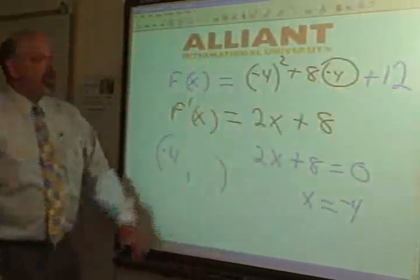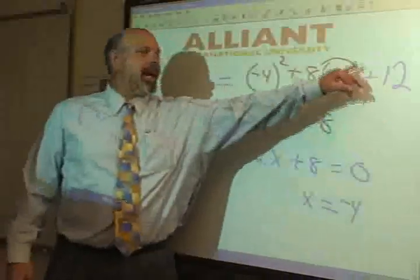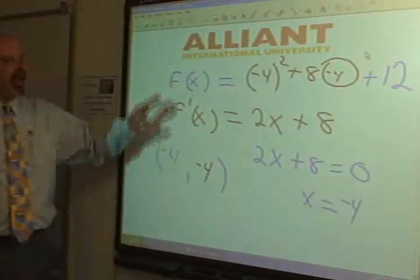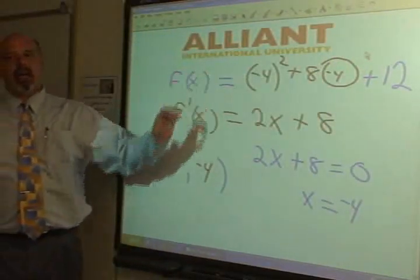Solved. This is 16, 28, minus 32 is negative 4. There is the vertex of that quadratic equation.